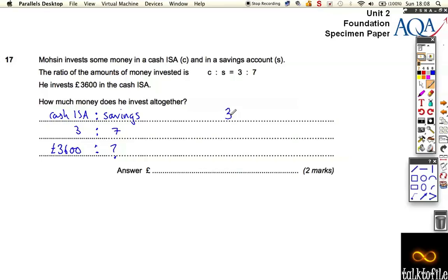To find out how much one part is, divide £3600 by 3, which equals £1200. So each part is worth £1200. I could do 7 times £1200 for the savings amount.